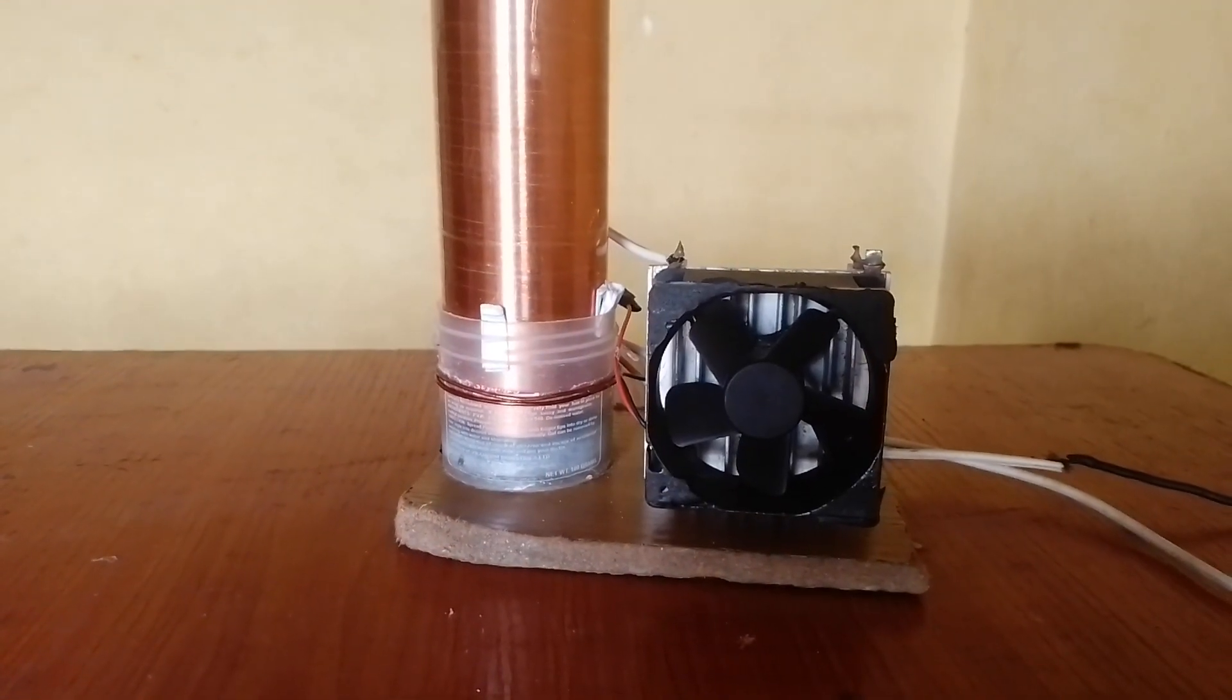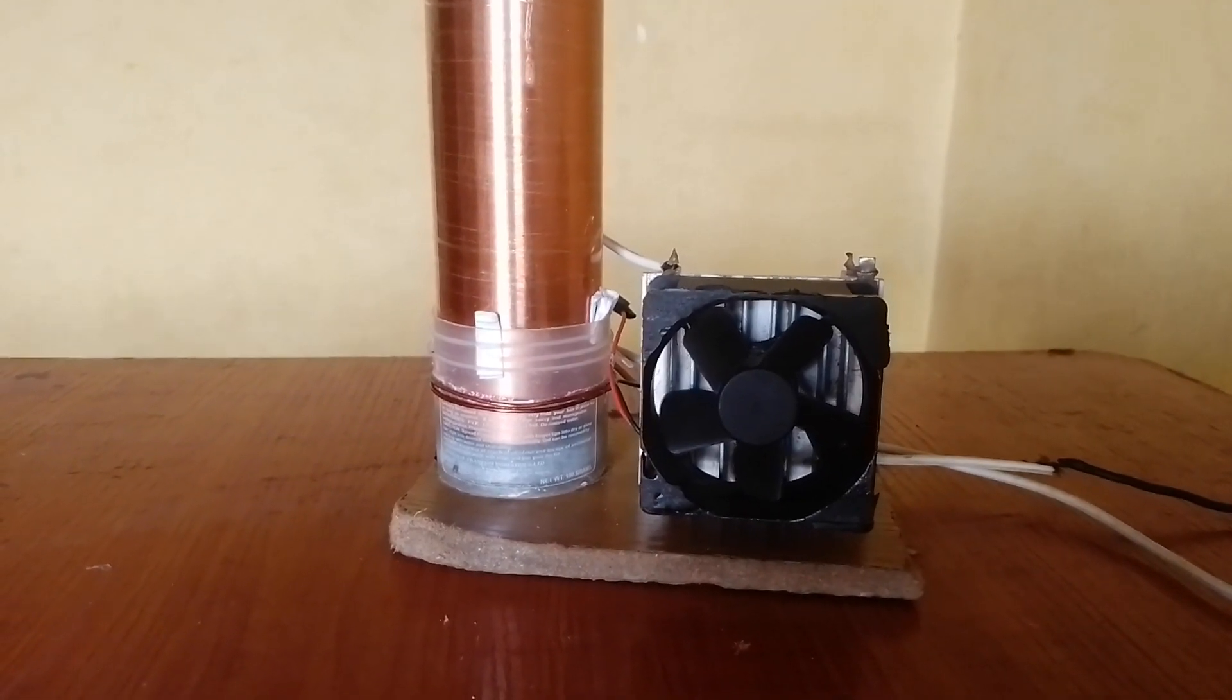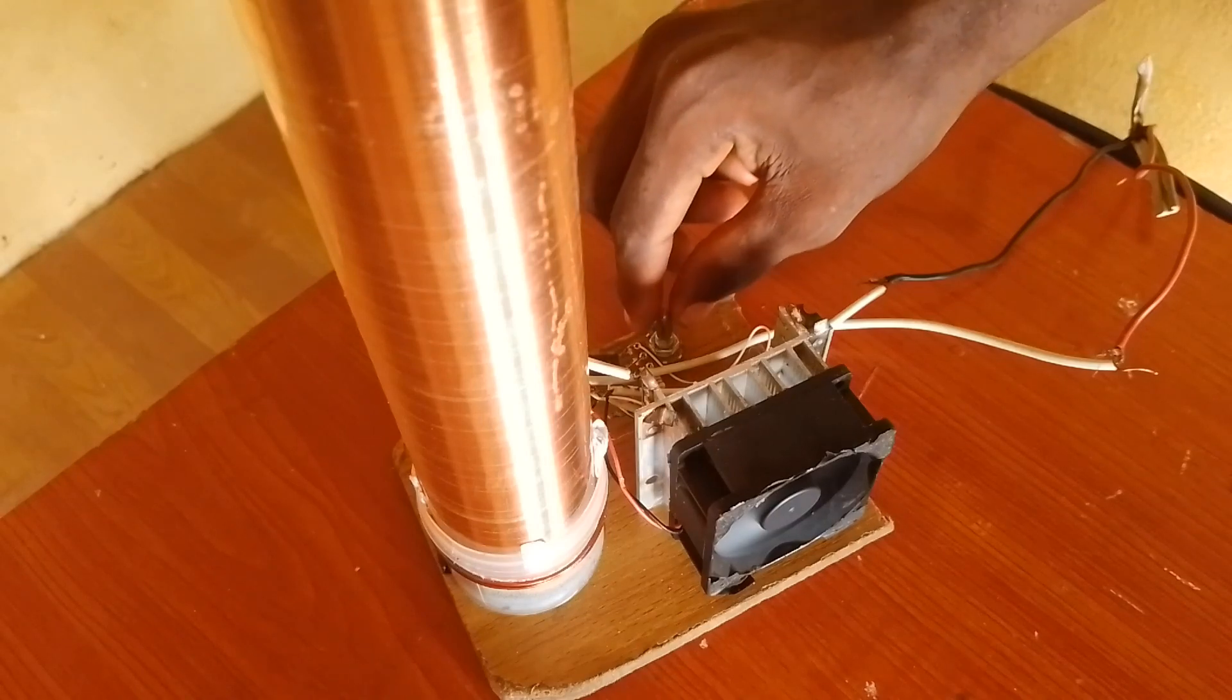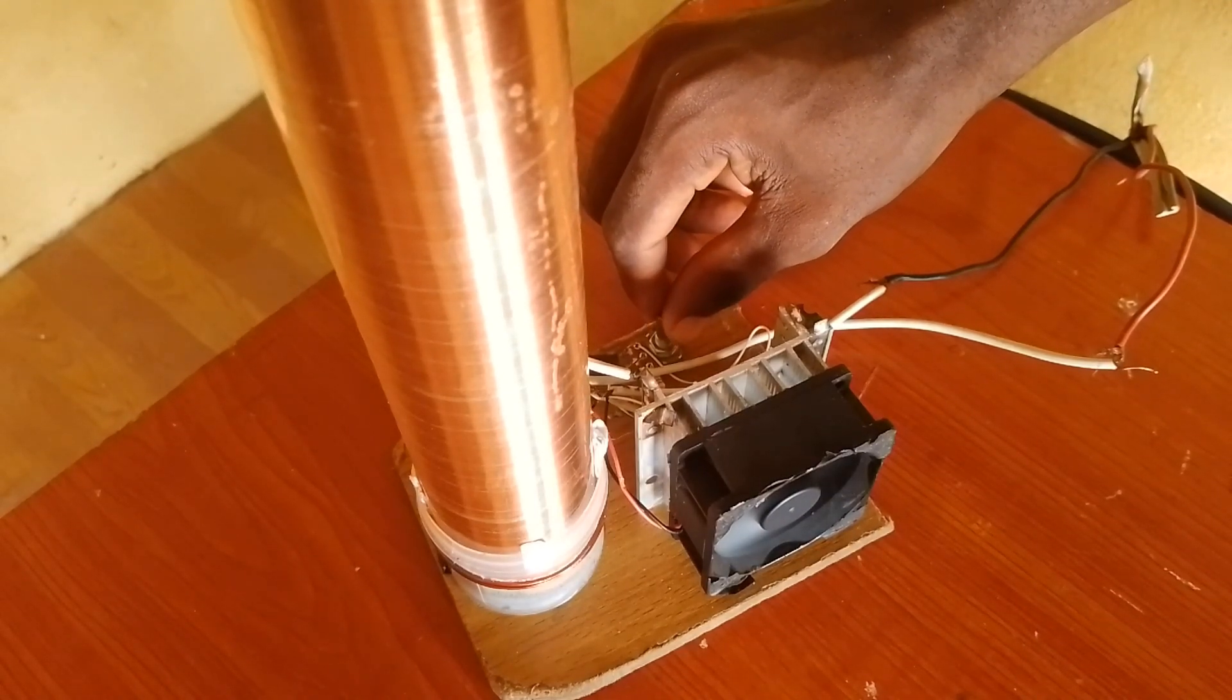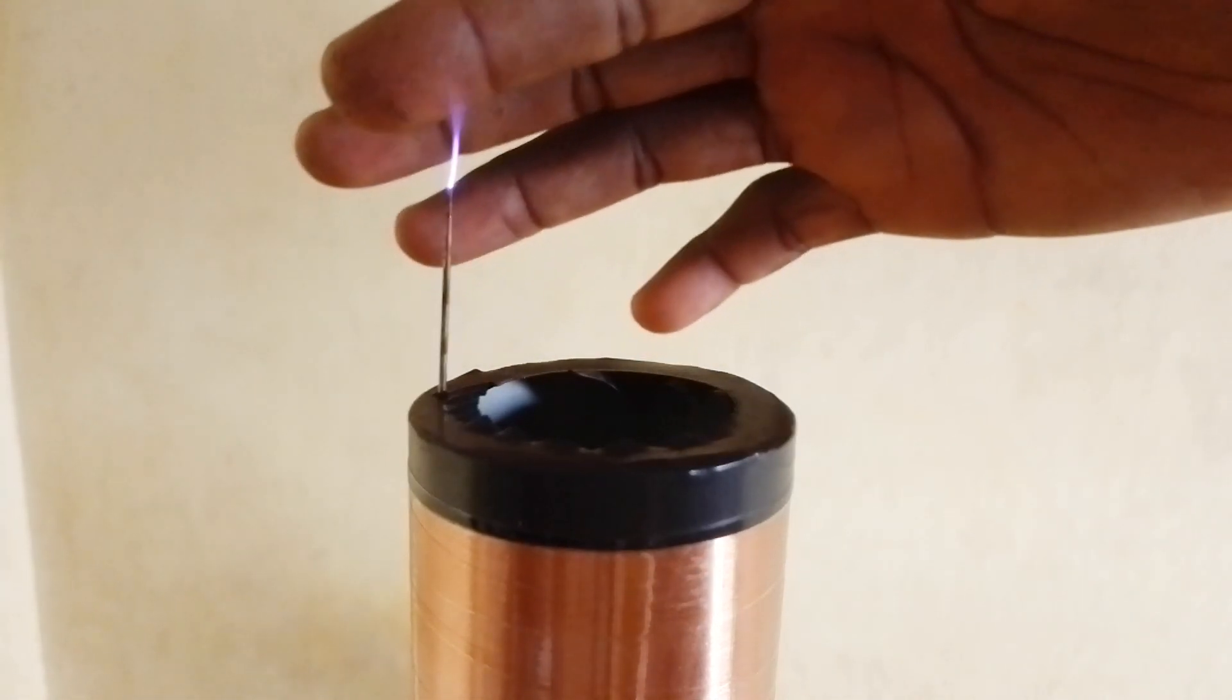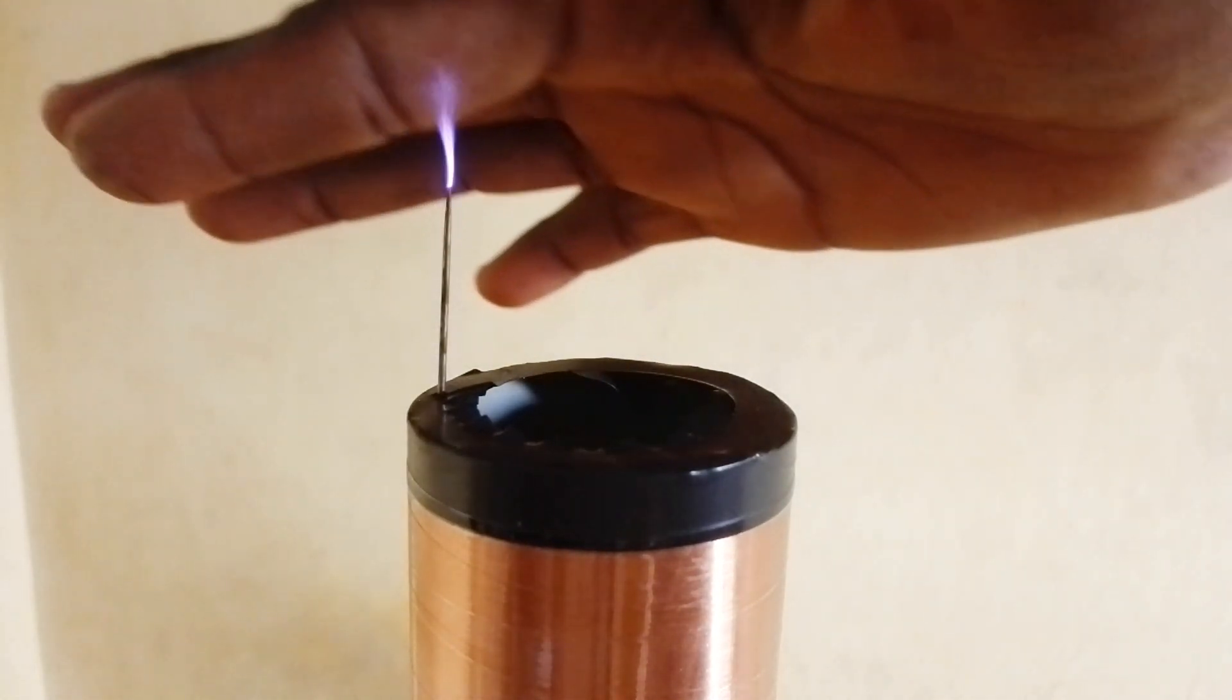So let me switch it on right now. I'm using a 12 volt power supply. Then I gradually increase the potentiometer. Whoa, you can see the high voltage spikes coming out!